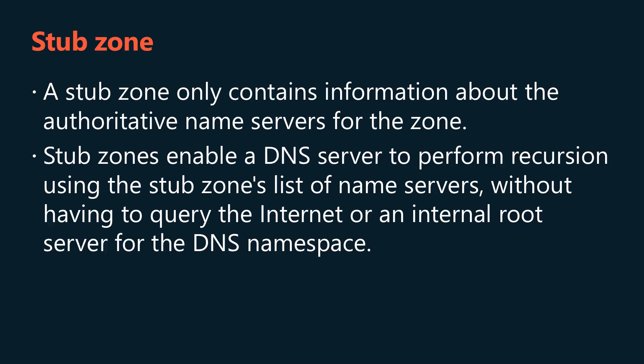A stub zone is a copy of a zone that contains only those resource records that are necessary to identify the authoritative domain name system servers for that zone. Typically, you use a stub zone to resolve names between separate DNS namespaces. A stub zone only contains information about the authoritative name servers for the zone. The zone hosted by the DNS server must obtain its information from another DNS server that hosts the zone, and this DNS server must have network access to the remote DNS server to copy the authoritative name server information about the zone.